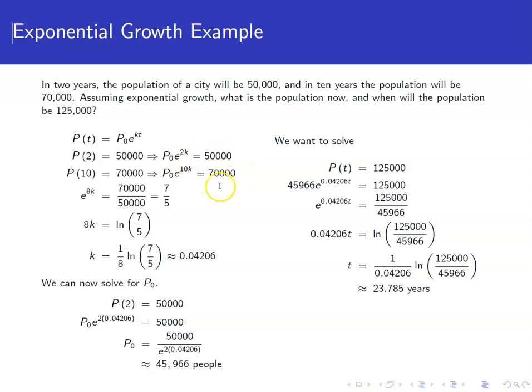We're going to divide these two equations. We'll take the second equation and divide by the first equation. When we divide, the P₀ terms cancel out. E^(10k) over e^(2k), we subtract exponents and get e^(8k) equals 70,000 over 50,000, which is 7/5.